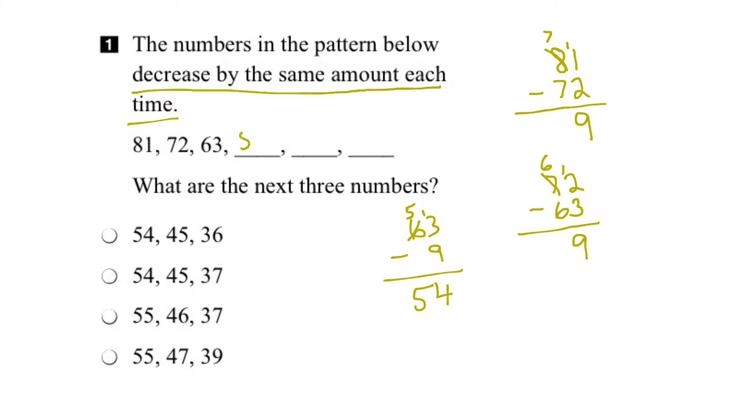And I can write that in here, 54. Okay, let's keep going. Well, the next number would be, again, subtracting 9 to follow the pattern. Borrow from here. That becomes a 14. So 14 minus 9 is 5. 4 minus 0 is 4. So the next number would be 45. So I can stick that in here.